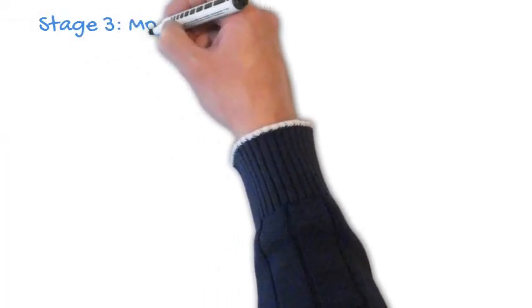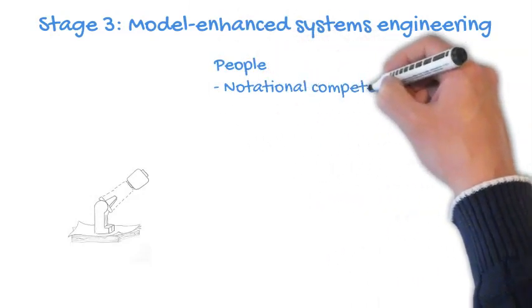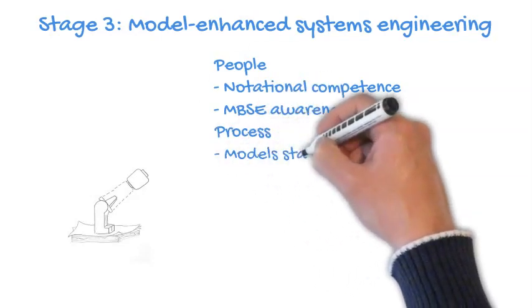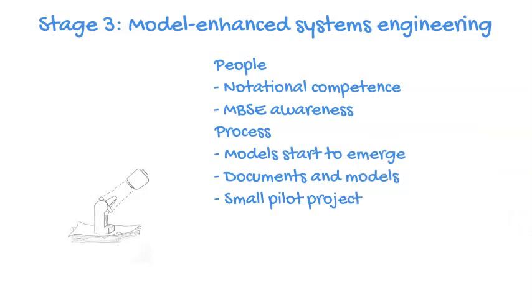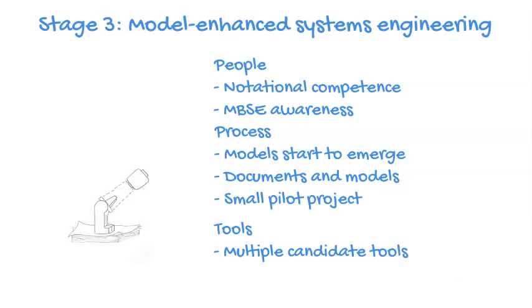Stage 3 we refer to as model-enhanced systems engineering. People now have notational competence and are starting to develop MBSE awareness — and there's a big difference between notation and MBSE. The models will start to emerge from the documents, and we'll start to see documents and models coexisting. MBSE may start to be applied on a small pilot project within one or two groups of a large organisation. People may also be looking at multiple candidate tools, starting to evaluate what's available.